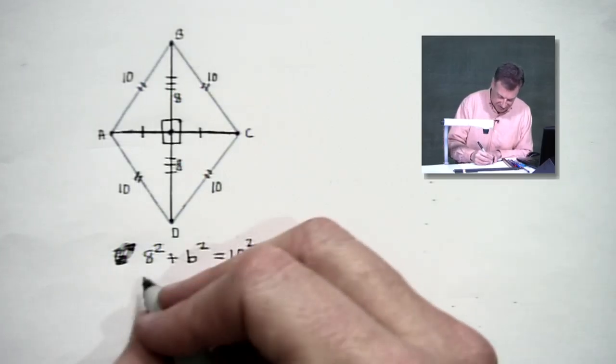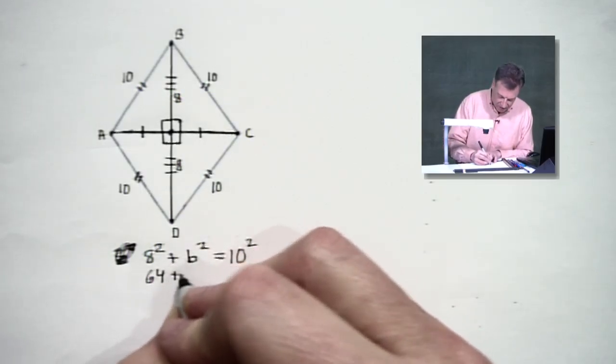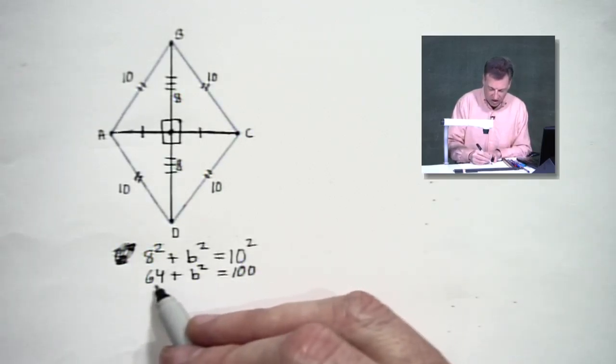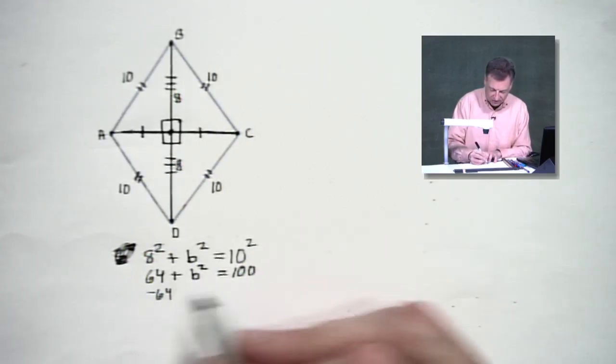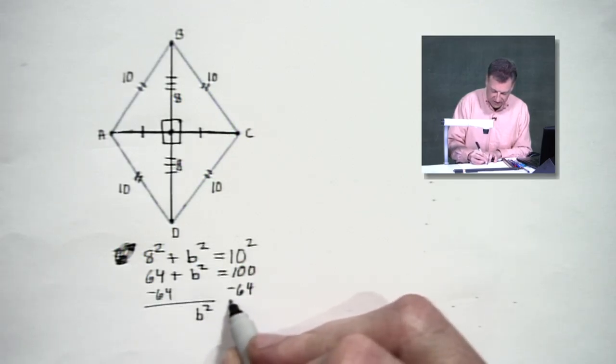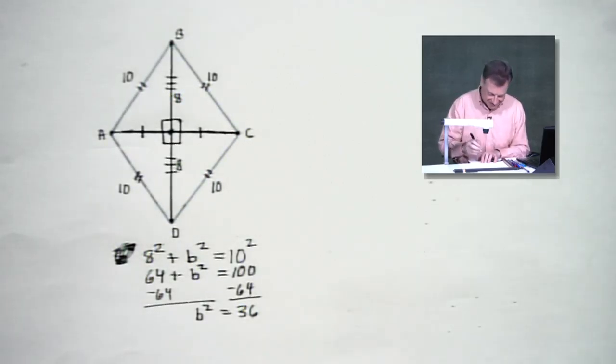Eight squared is 64, we've got B squared, and 10 squared is 100. We're going to lose the 64, we'll subtract. We will end up with B squared on the left, 36 on the right. And yes, it's going to be six, just like I promised you.